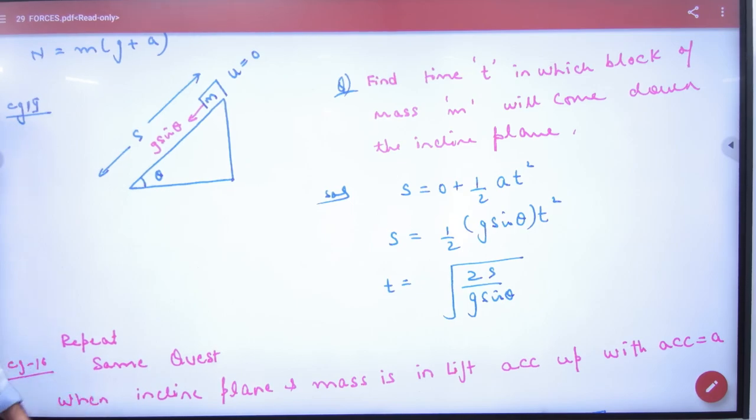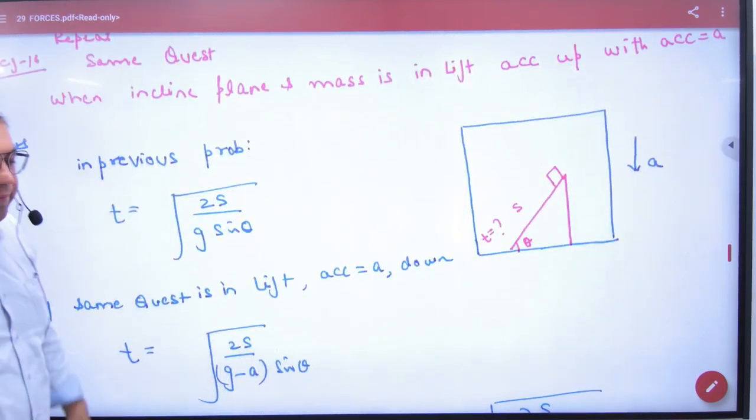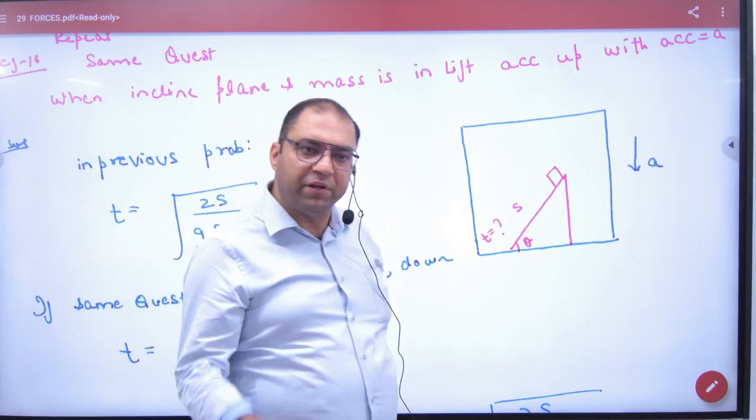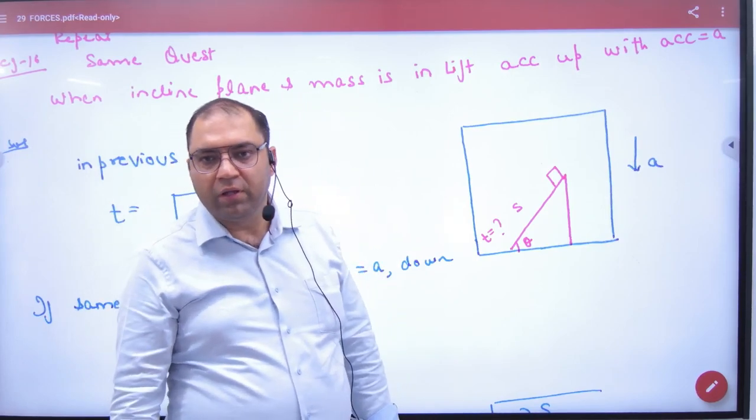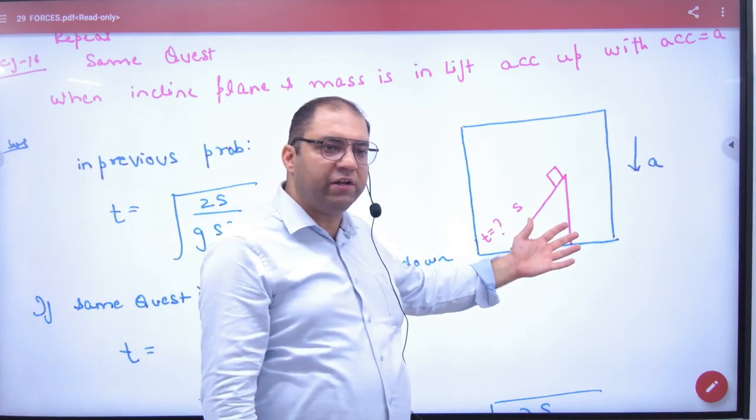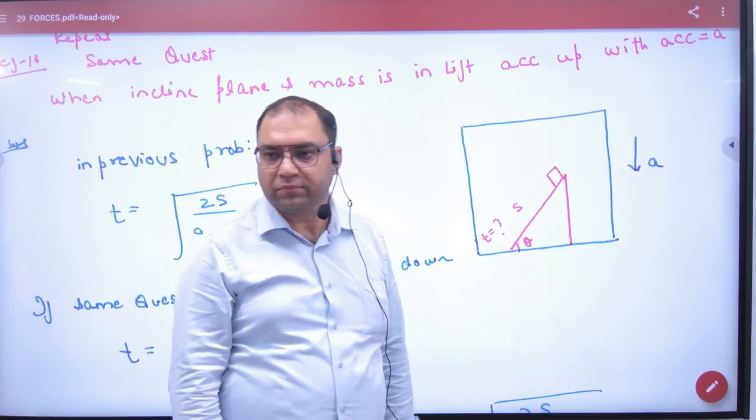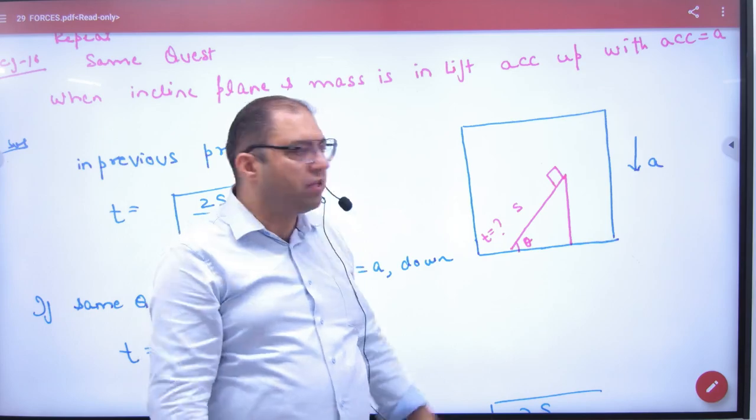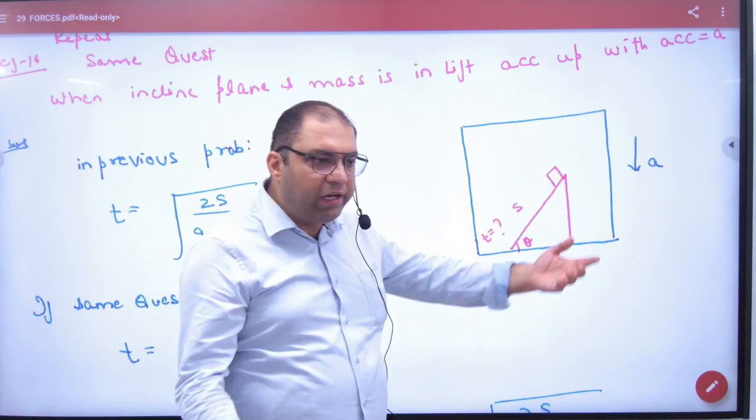Now the question is not this. Question is this: the inclined plane, the object, this whole arrangement is in a lift. And what is the lift doing? In the lower direction, accelerating. Now tell us how many times this object will come down.